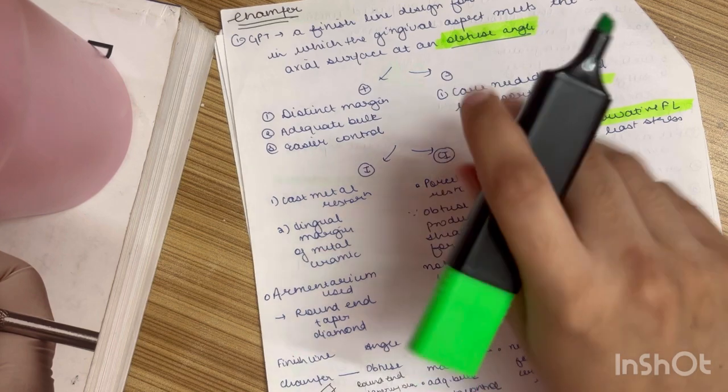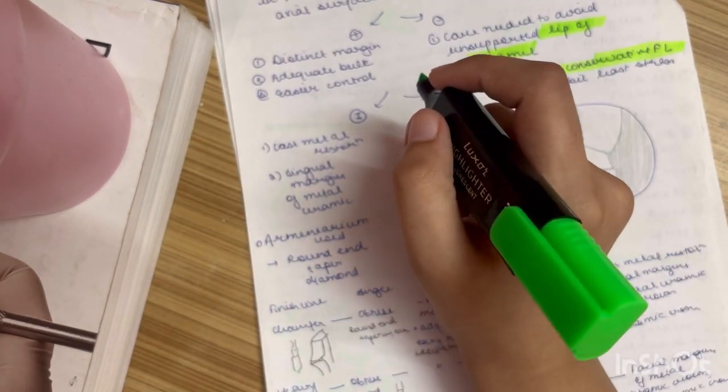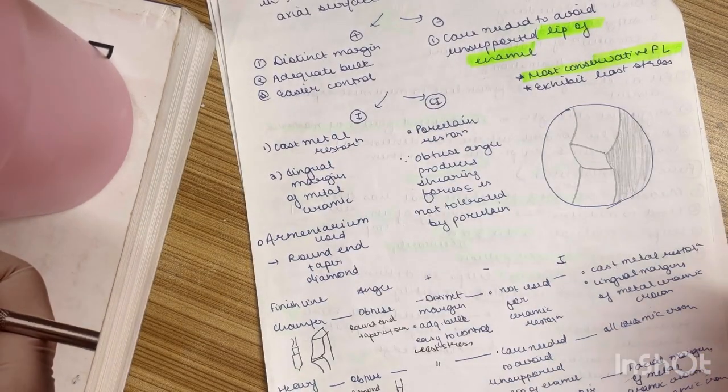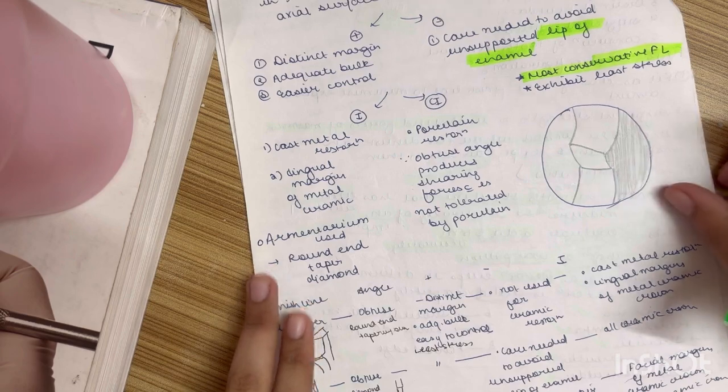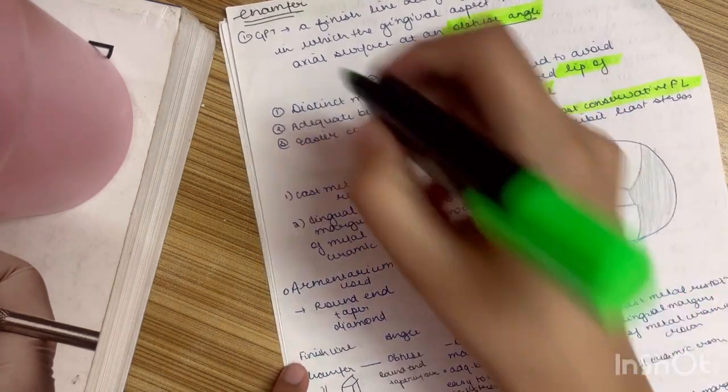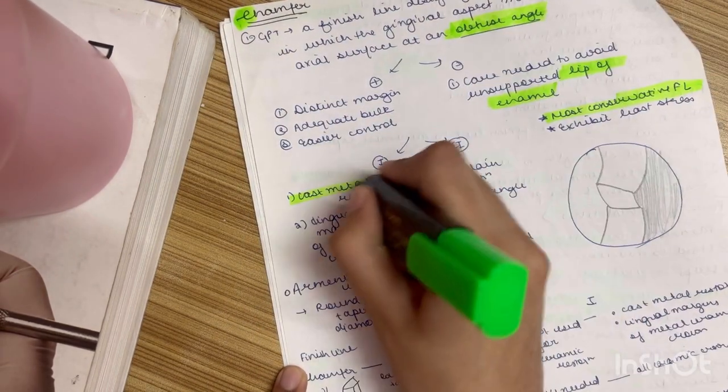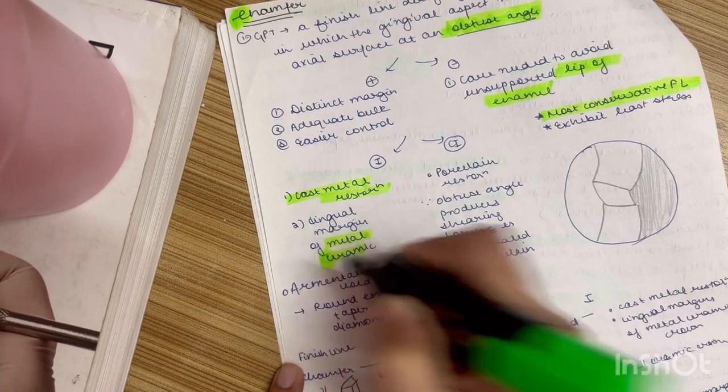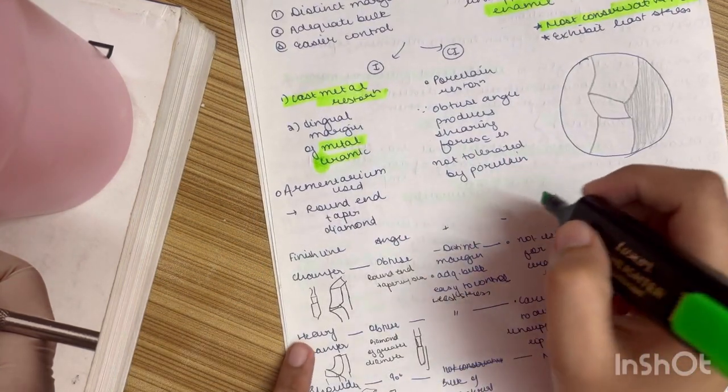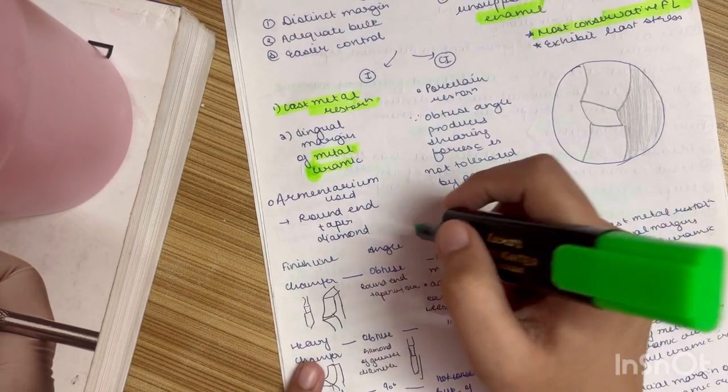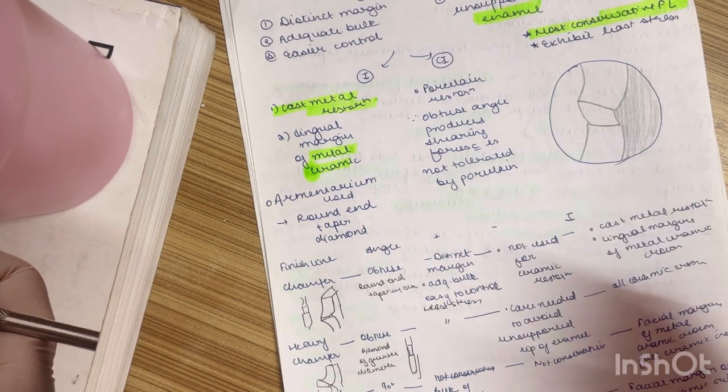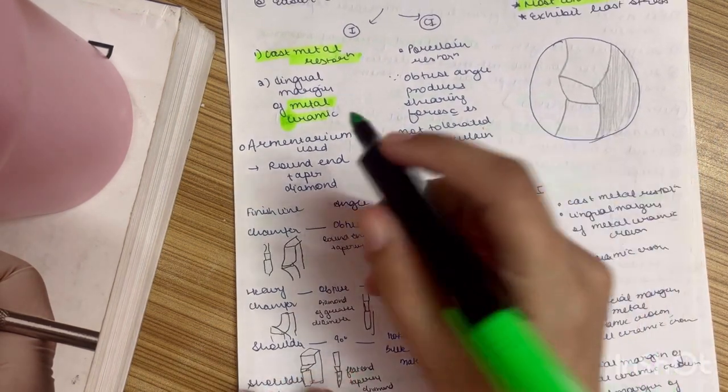Now these are simple points. So it is important you should always remember the indications of the finish line. So indications of chamfer is C for chamfer, C for cast metal restoration, lingual margin of ceramic. Now armamentarium this is like viva question only: round and tapered diamond. Now this is the chart that I was telling you about.